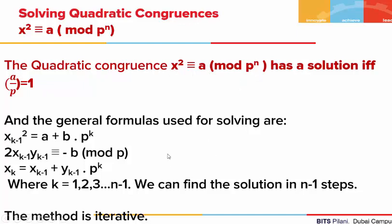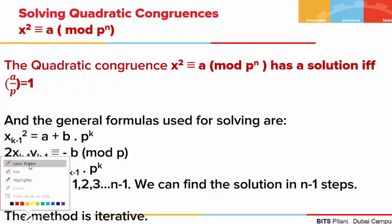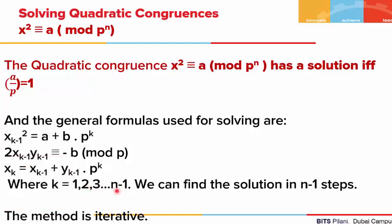The method used for solving such congruences is iterative in nature, and we use these formulas to solve it. We do that in a number of steps. The question is: how many steps are required to reach the solution? If our power of the prime number is n, then the number of steps needed to reach the solution will be n minus 1. So we solve the quadratic congruence in n minus 1 steps.